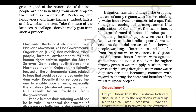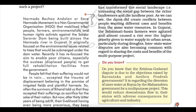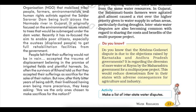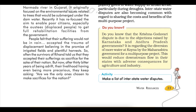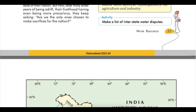Interstate water disputes are also becoming common regarding sharing the costs and benefits of multi-purpose projects. The Krishna-Godavari dispute arose from objections raised by Karnataka and Andhra Pradesh governments regarding the diversion of more water at Koyna by the Maharashtra government for a multi-purpose project, which would reduce downstream flow in their states with adverse consequences for agriculture and industry.